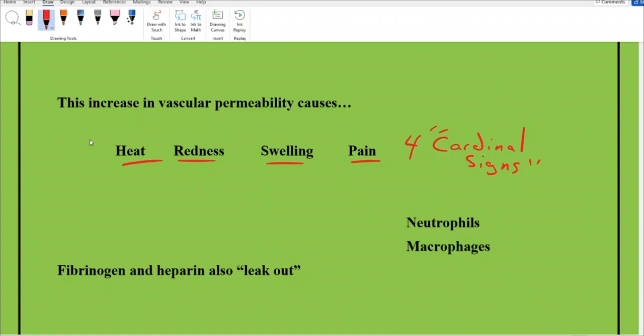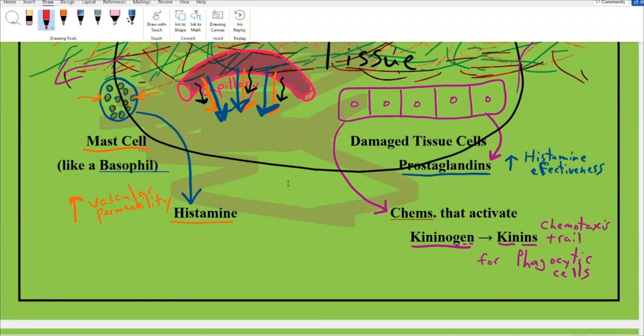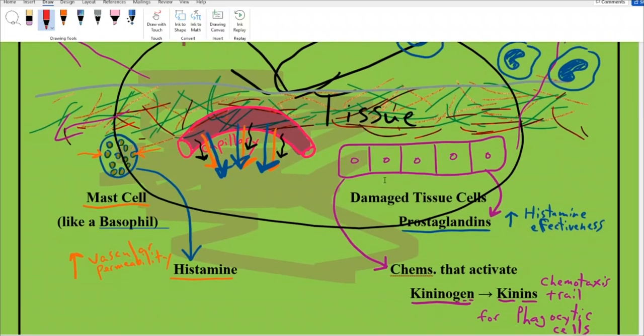Not cardinal because it reminds us of a bird or a priest, but because one of them is redness, like the red cardinal. The heat comes from release of fluid from my leaky capillaries. Redness, a little bit of hemoglobin is coming out too. Swelling, I've got more fluid leaking out than my lymphatic system can drain away quickly. And pain, histamine and kinins trigger free nerve endings, plus the swelling puts physical pressure against nervous receptors.